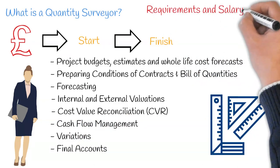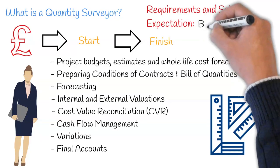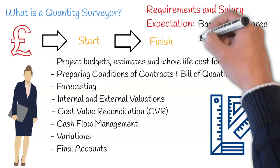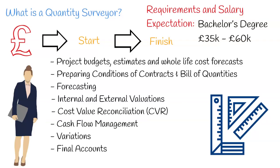Typically a quantity surveyor will require a bachelor's degree, which can take three years to obtain full-time or five years part-time if you're learning on the job as an apprentice or a trainee. Once fully qualified, a quantity surveyor can expect to earn a salary of between £35,000 to £60,000 a year, depending on experience, location and sector of construction.